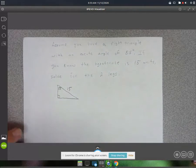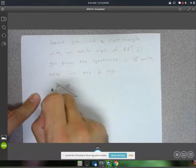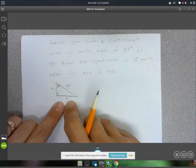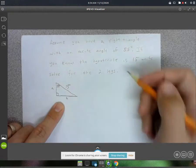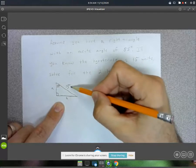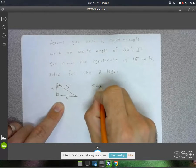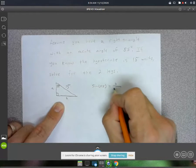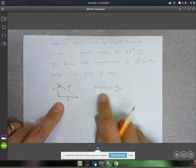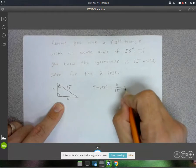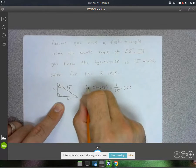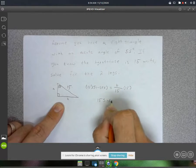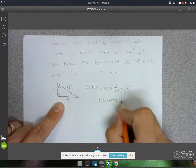Okay, so we'll call these sides A and B. To solve for B, I could use sine of 55 because sine is opposite over hypotenuse. So sine of 55 equals B over 15. To solve this equation, you just multiply by 15. So 15 times sine of 55 equals B.